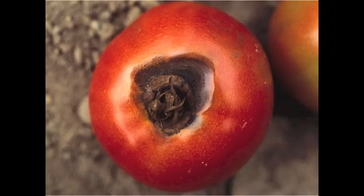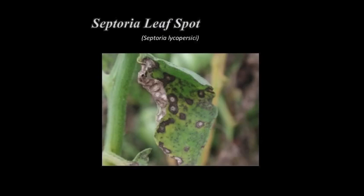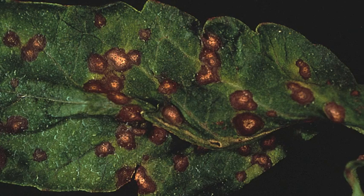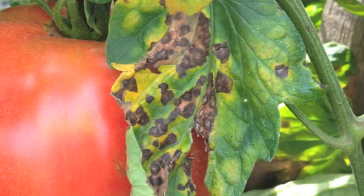A second imitator is septoria leaf spot, which is another common disease that occurs only on tomato. It can almost be as destructive as late blight in very wet growing seasons. Septoria lesions are round, developing a tan or grey center with small black dots. These black dots are resistant structures that allow the fungus to survive in the soil over winter.